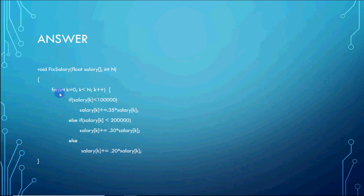If you have 5 elements, the loop should start from 0, with k less than 5. So it will work on salary[0], salary[1], salary[2], salary[3], and salary[4].